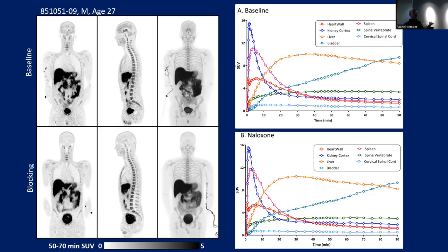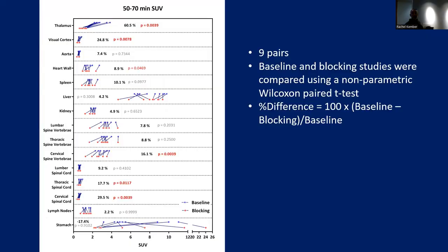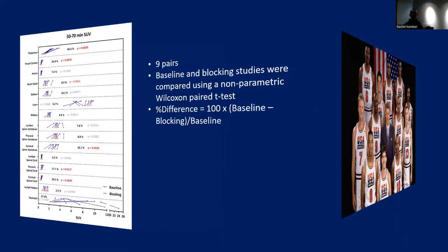Opioid receptors are throughout the body, including on the heart. In BLS/ACLS, the acronym MONA includes morphine because opioid receptors on the heart, when activated, can dilate coronary arteries and restore blood flow. No one has been able to measure this before with whole-body PET. We can calculate receptor occupancy and displacement across different organs by doing these blocking studies. We can also measure the percent blocked in different organs — brain, spinal cord, heart — all in a single scan session.